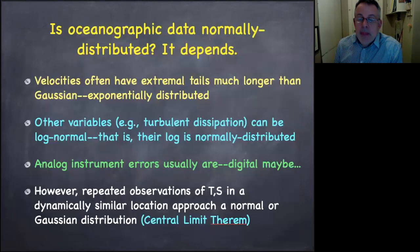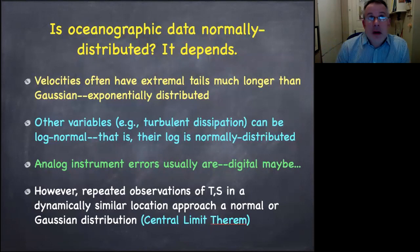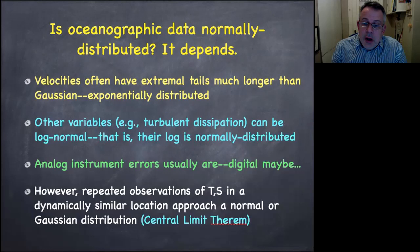So you might wonder whether oceanographic data is normally distributed. We saw some examples of winds where they were approximately, and then the speed, wind speed where it wasn't. And so velocities often have long tails to one direction or the other. That's typical of turbulence. Sometimes they are exponential or log normally distributed. Analog instrument errors are usually pretty normal. Digital instruments, not so much. But here's the important thing.